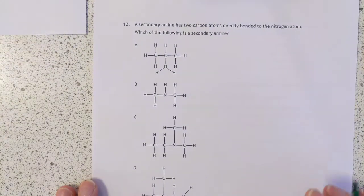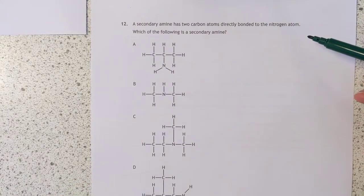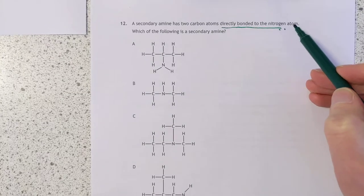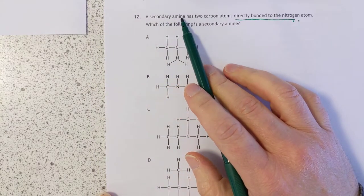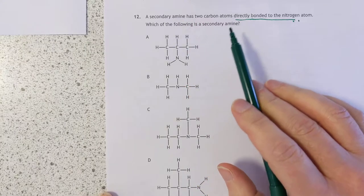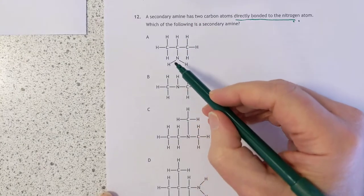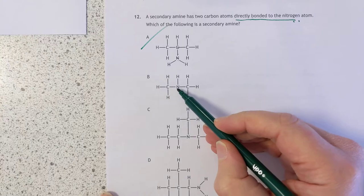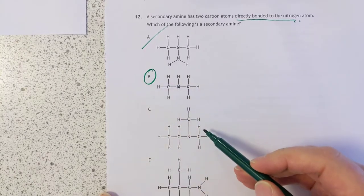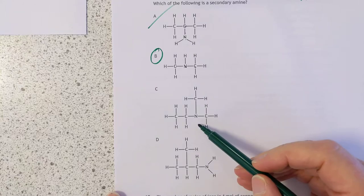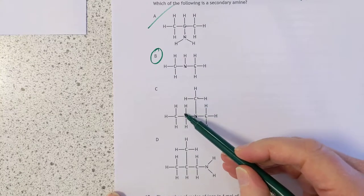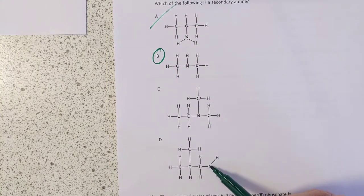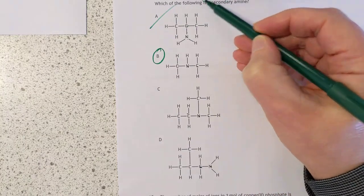Question 12: A secondary amine has two carbon atoms directly bonded to the nitrogen atom. This is problem solving. We've never heard of secondary amines at this level yet, but it tells you in the question the definition. Just follow that definition. Here's the nitrogen atom, it's only got one carbon directly bonded to it. It's not that. Here's the nitrogen atom, it's got two carbons. Yep, that looks like it could be. This nitrogen atom has got one, two, three carbons attached to it. This nitrogen atom has got one carbon attached to it. We want two. So yep, it's B.